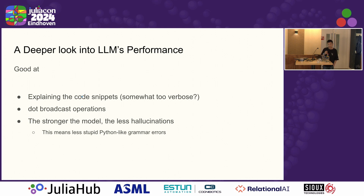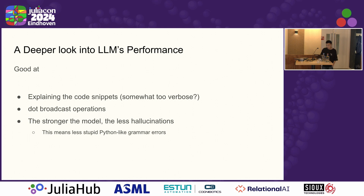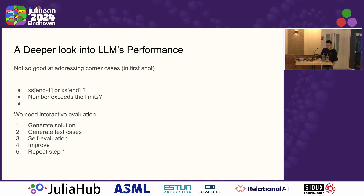A closer look into LLM performance: large language models are very good at explaining code snippets, and sometimes it is very verbose in my opinion. One thing that surprised me is that language models are very good at dot-broadcasting related operators. Also, stronger models tend to produce less Pythonic grammar errors — meaning fewer Python-like mistakes in Julia syntax. For cases where language models still struggle, we may need some interactive evaluation going forward.